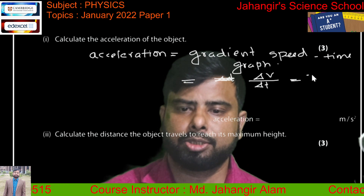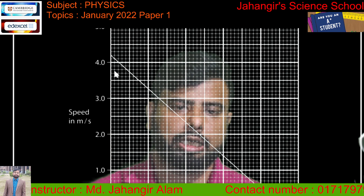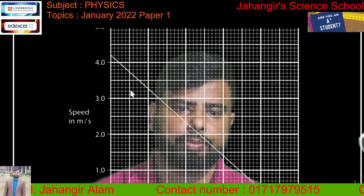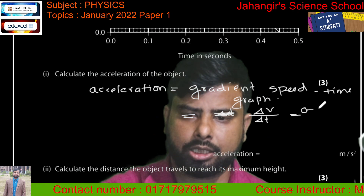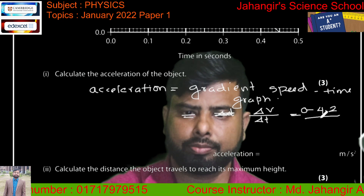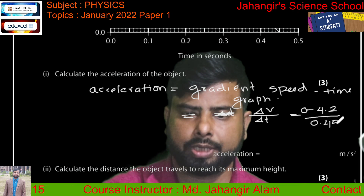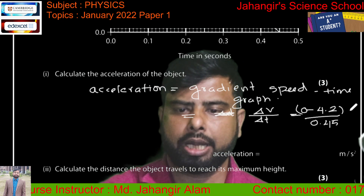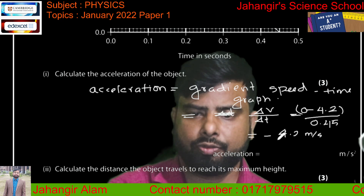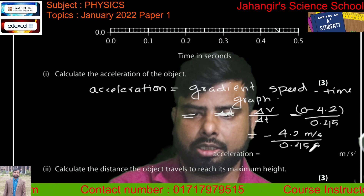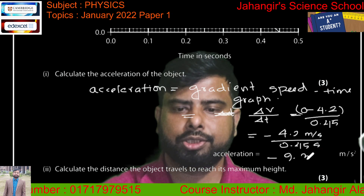Looking at the graph, the initial speed is 4.2 meters per second and the final speed is 0. So we calculate: 0 minus 4.2 divided by 0.45 seconds, giving minus 4.2 meters per second divided by 0.45 seconds. The answer is minus 9.3 meters per second squared.